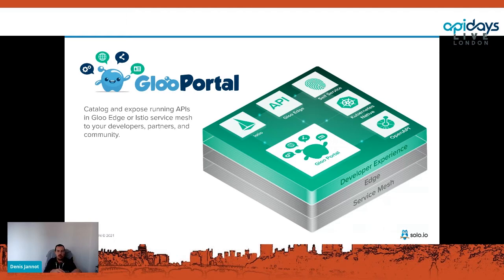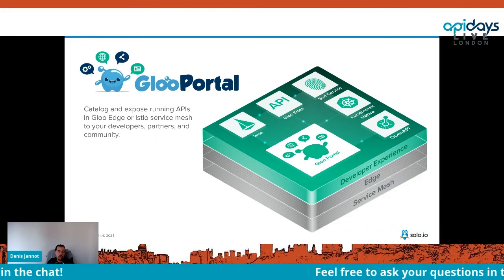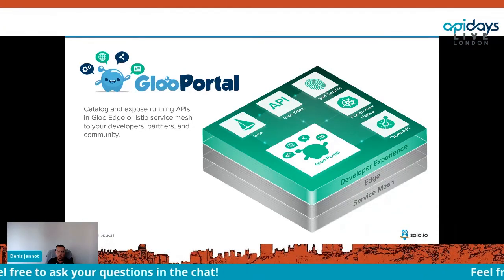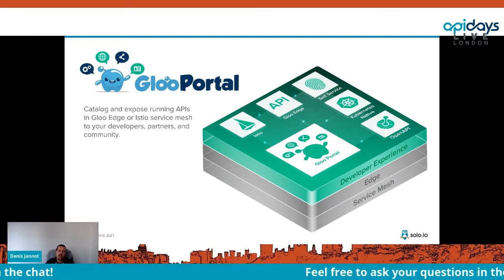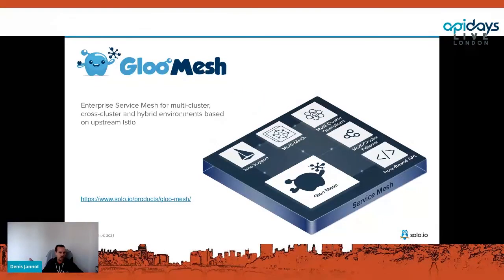What Gloo Portal does behind the scenes is translate all this configuration into Gloo Edge configuration. It's a way to nicely expose your APIs without creating a lot of complicated Gloo Edge configuration manually — letting Gloo Portal handle it, while offering different branding for your users.